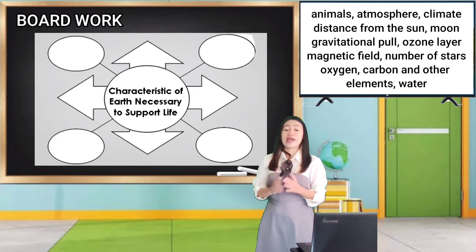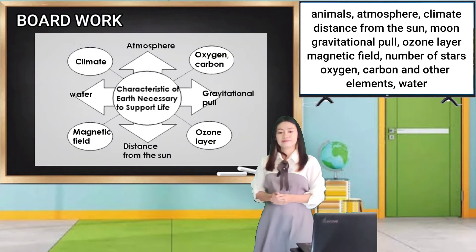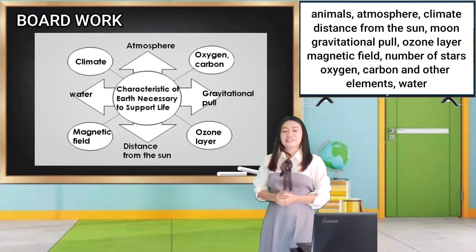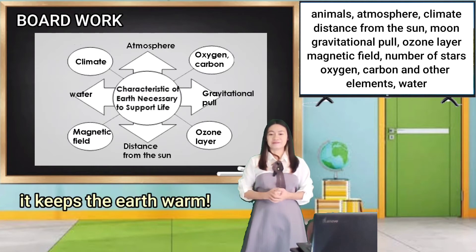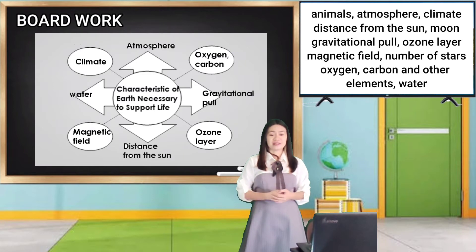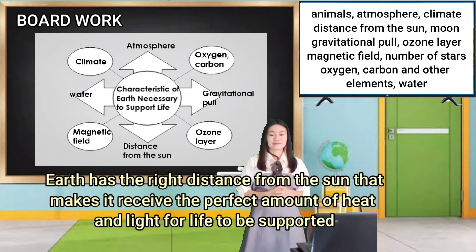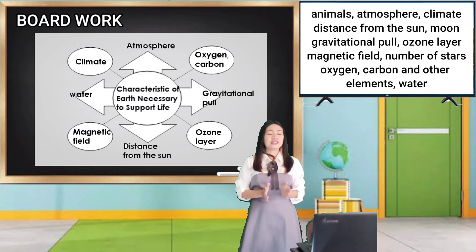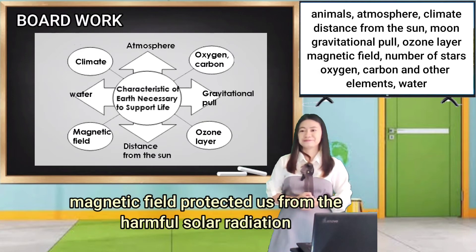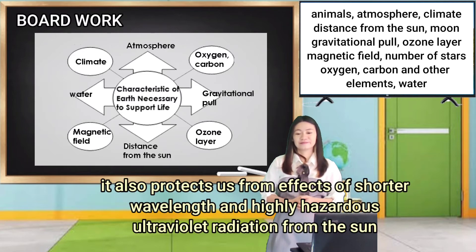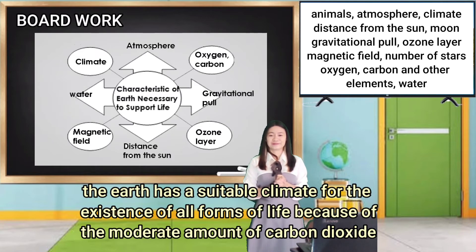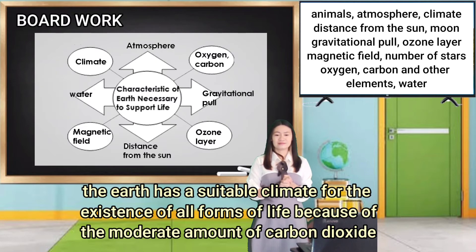I want you to choose your answer inside the box. So, why do you think atmosphere supports life on Earth? Hannaby? It keeps the Earth warm. Good. How about distance from the sun? Vincent? Earth has the right distance from the sun that makes it receive the perfect amount of heat and light for life to be supported. Nice! How is magnetic field necessary? Lila? Magnetic field protected us from the harmful solar radiation. And the ozone layer? It also protects us from the effects of shorter wavelength and highly hazardous ultraviolet radiation from the sun. Wow! How about the climate? The Earth has a suitable climate for the existence of all forms of life because of the moderate amount of carbon dioxide.